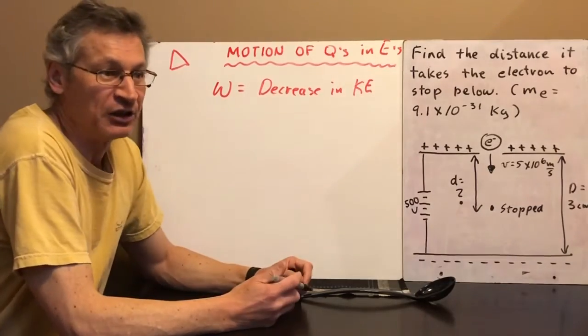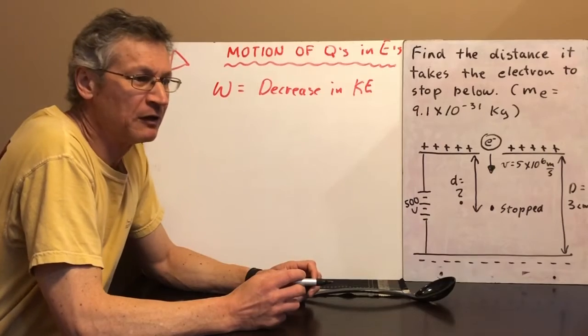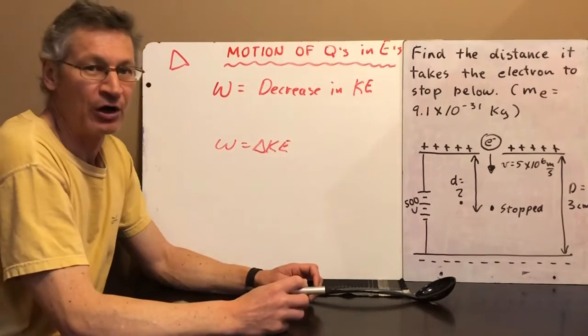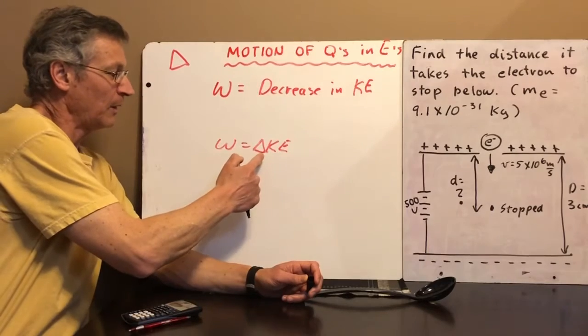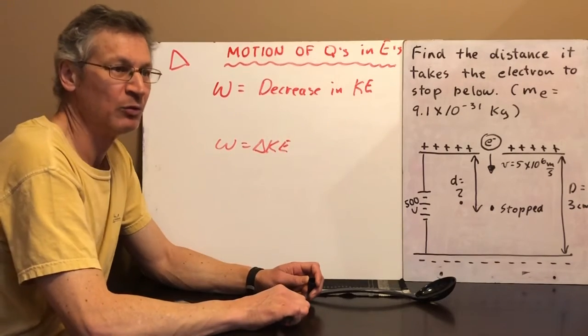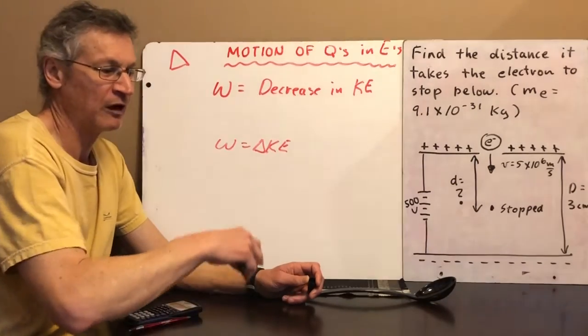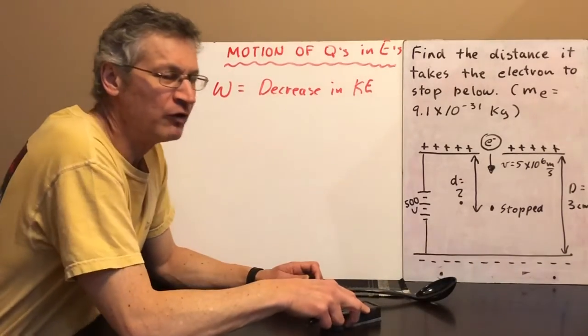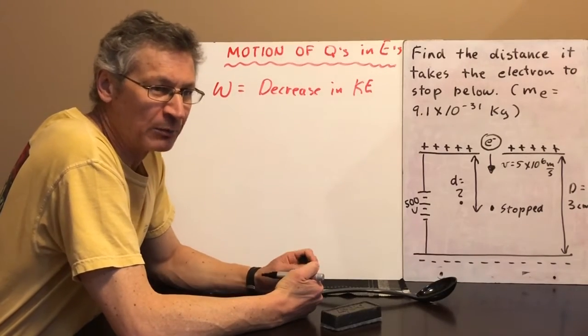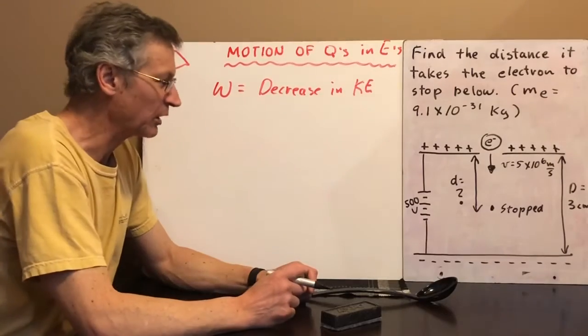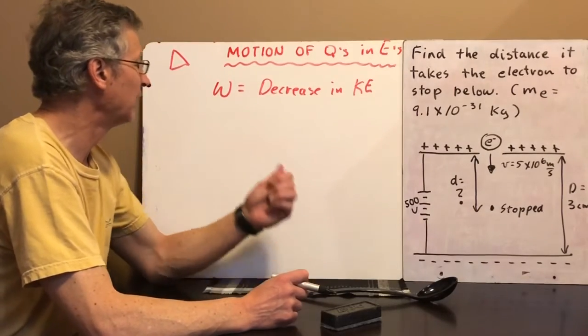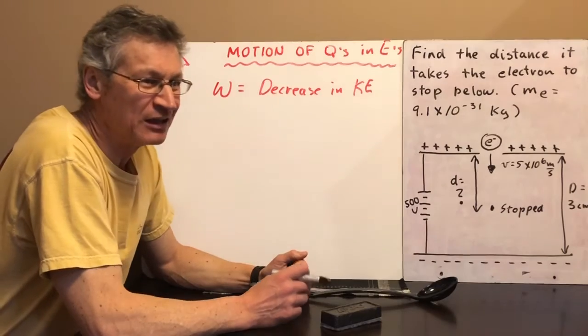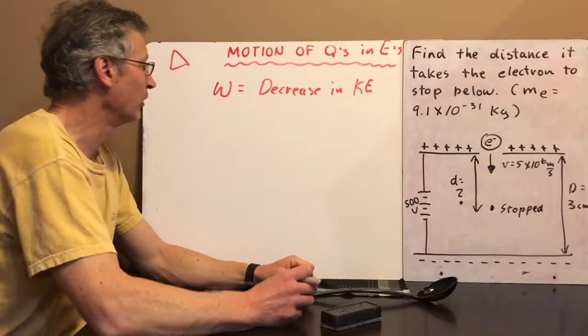Because, let's face it, the decrease in kinetic energy is a change. The last unit when we did this, when we said W is equal to delta KE, we were very rigorous about saying that delta KE is equal to KE2 minus KE1, and sometimes that turned out to be positive, sometimes that turned out to be negative. With this unit on electric fields though, we've been more working with absolute values, not worrying about sign too much except right at the end. So we'll say the work done is equal to the decrease in kinetic energy.